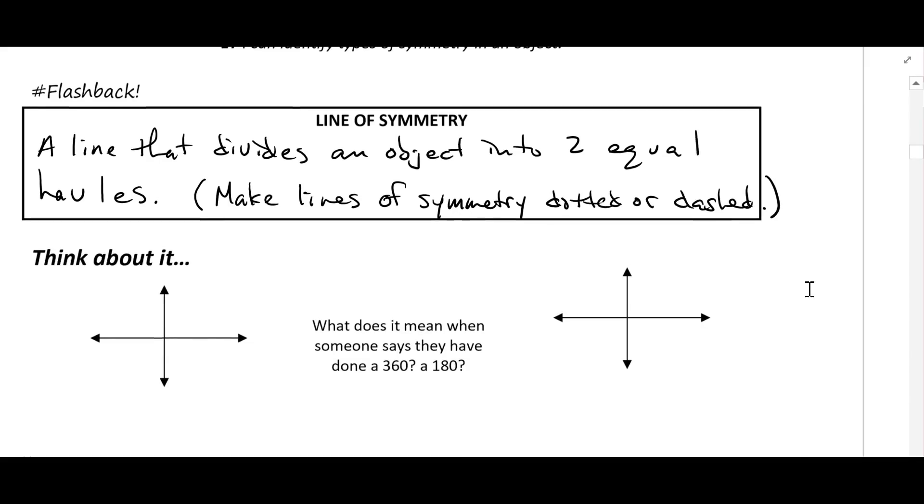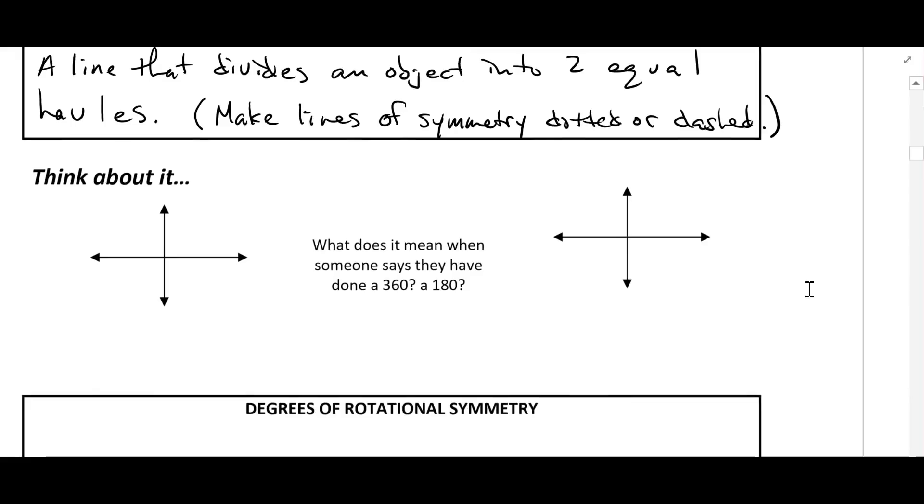Alright so let's move on and talk about a different type of symmetry. So what does it mean when someone says they have done a 360 or a 180? So a 360 means that they've rotated a full revolution all the way around. So whatever way they started facing they're going to end facing that way as well. If we just did a 180 that means you're going to face the exact opposite direction of the way that you started. So that would be a 180 degree rotation.